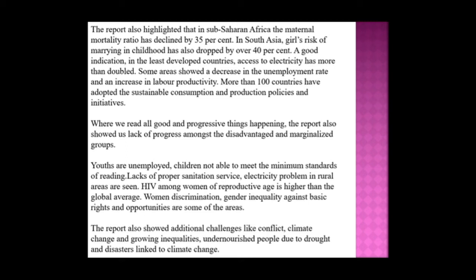The 2018 SDG report highlighted that in sub-Saharan Africa, the maternal mortality ratio has declined by 35 percent. In South Asia, girls' risk of marrying in childhood has dropped by over 40 percent. In the least developed countries, access to electricity has more than doubled. Some areas showed a decrease in unemployment rate and increase in labor productivity. More than 100 countries have adopted sustainable consumption and production policies and initiatives.